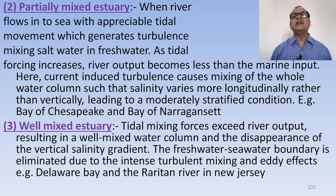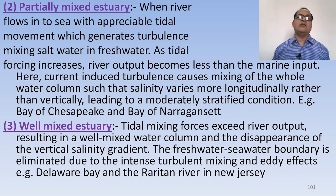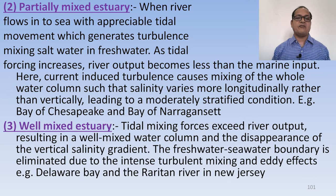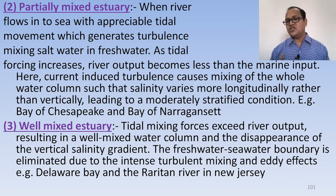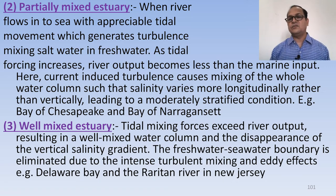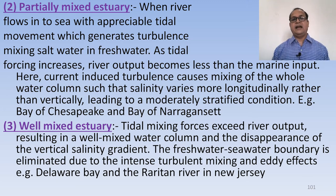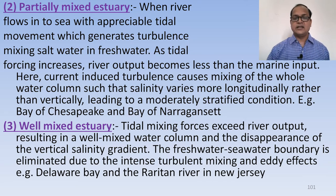The third type is the well-mixed estuary. In a well-mixed estuary, tidal mixing forces exceed river output, resulting in a well-mixed water column and disappearance of vertical salinity gradient. The fresh water–sea water boundary is eliminated due to intense turbulence mixing and the eddy effect. Examples include Delaware Bay and the Raritan River in New Jersey.